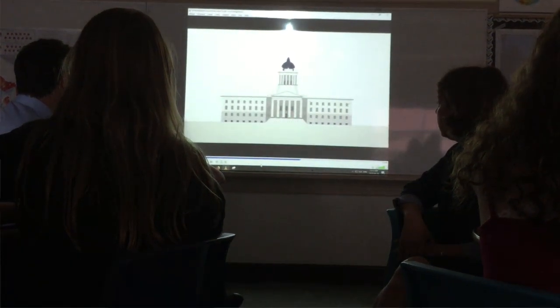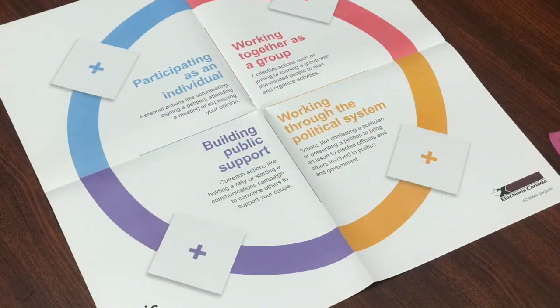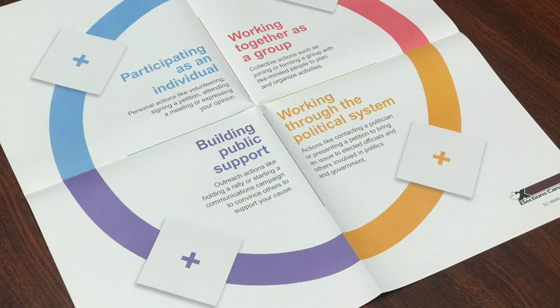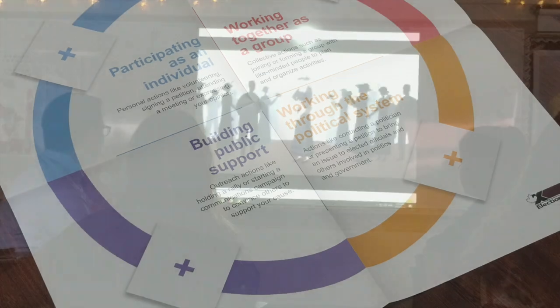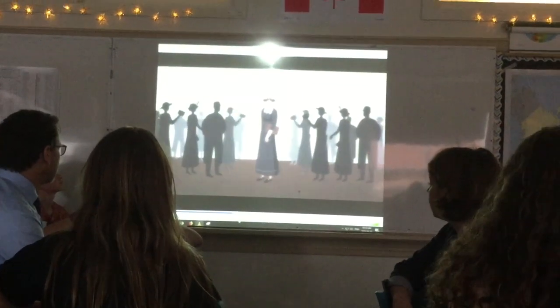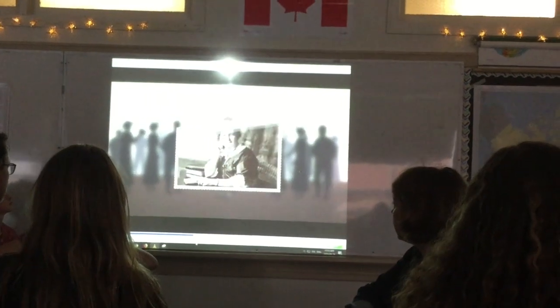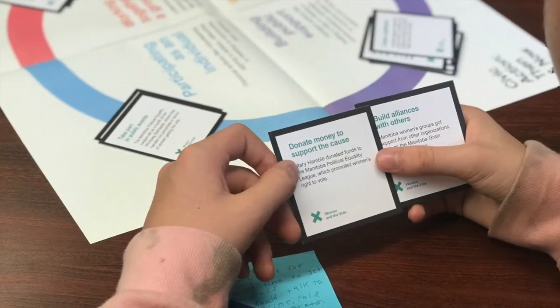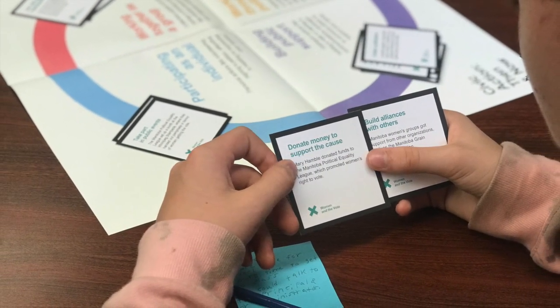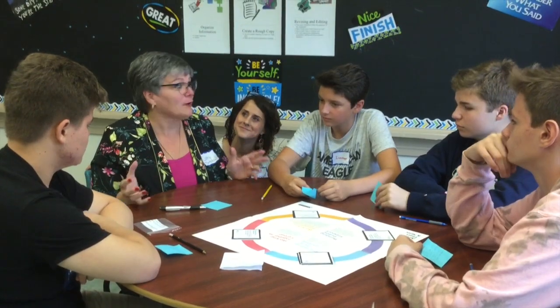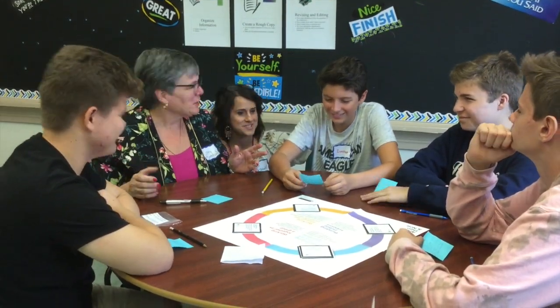This is one of five new activities that Elections Canada is launching today that we helped test in Nova Scotia. This particular one is looking at ways that students can be involved in civic action. We use the case study of women getting the right to vote over 100 years ago, and we look at the kinds of things that they did in order to make that happen, and then try to bring it forward to things we can do in our day and age as young people.